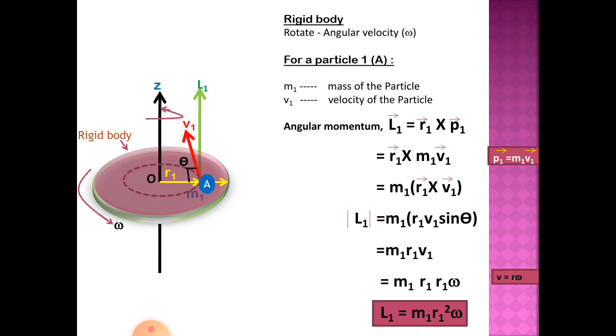Then you substitute r1 omega for v1. Finally you will get L1 is equal to m1 r1 squared omega. This is the angular momentum of the first particle called A.